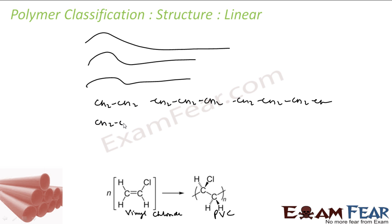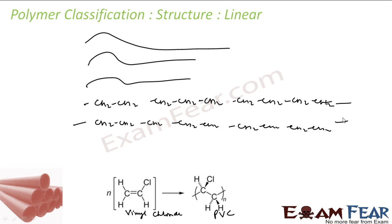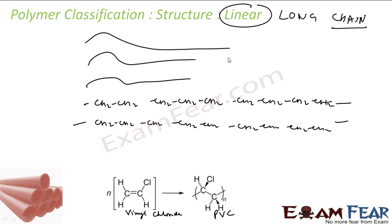These chains are not hindered by interactions, so they are resolved into long chains. Because they form long, straight chains with no branching, they are called linear polymers — it is more like a long, continuous chain.